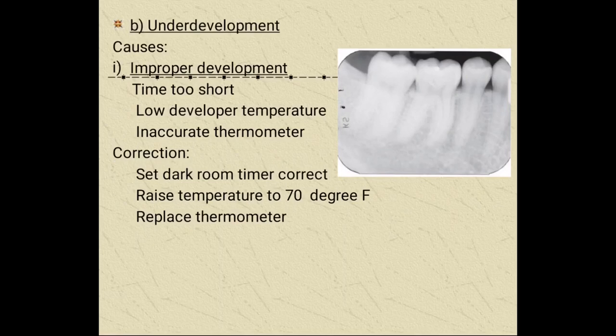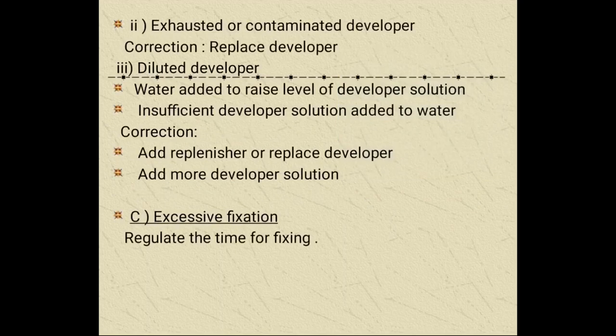Under-development causes include keeping the film too short a time in developer solution, low developer temperature, or an inaccurate thermometer. We can correct it by setting the darkroom timer correctly and raising the temperature to 70 degrees Fahrenheit, and replacing the thermometer. An exhausted or contaminated developer should be replaced. A diluted developer — where water was added to raise the level — requires adding replenisher or replacing developer. Excessive fixation requires regulating the time for fixing.